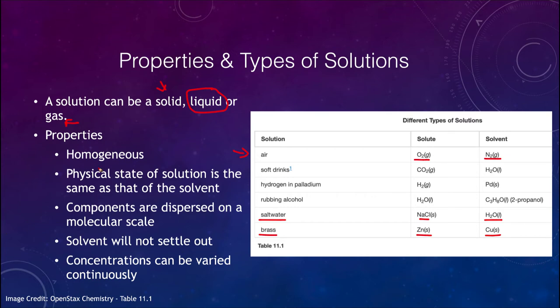The properties we've talked about these a little bit already: it has to be homogeneous, so not just separated materials but actually completely mixed together. The physical state has to be the same, so you have to have all as a gas, all as a liquid, or all as a solid. The components need to be dispersed at the molecular scale. The solvent will not settle out, it will not precipitate out of the solution, and you can vary the concentrations continuously.